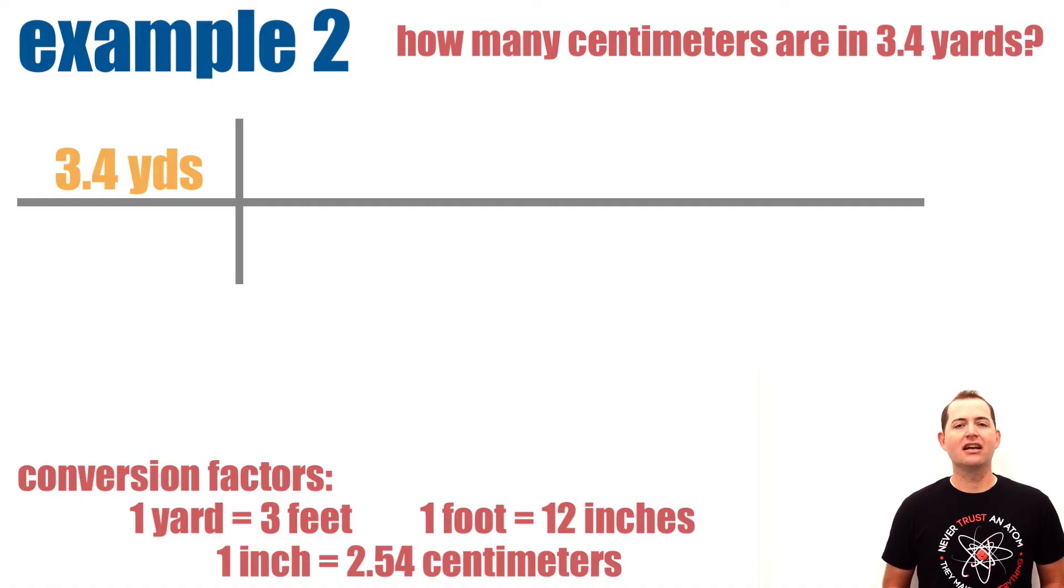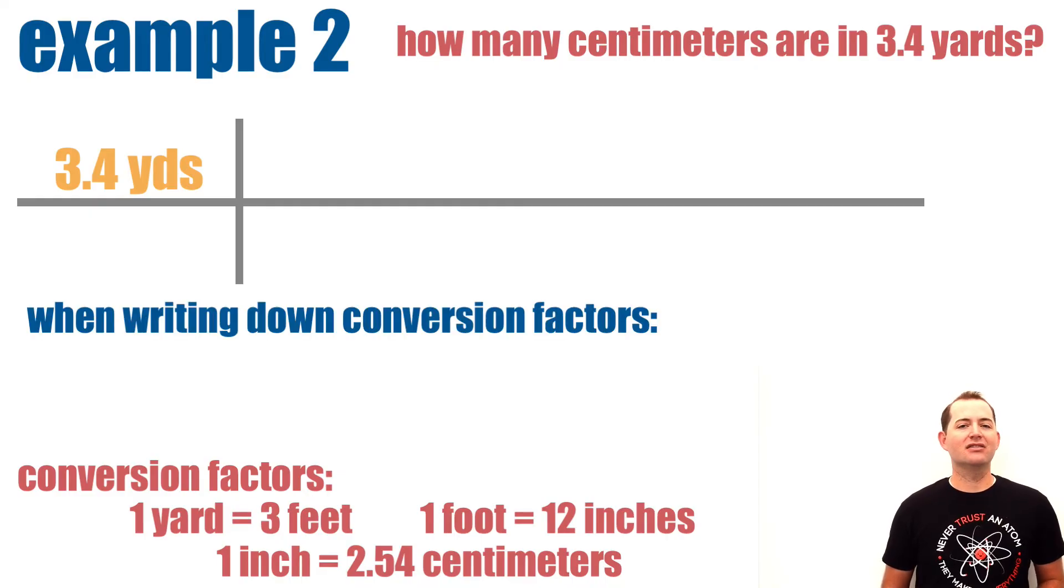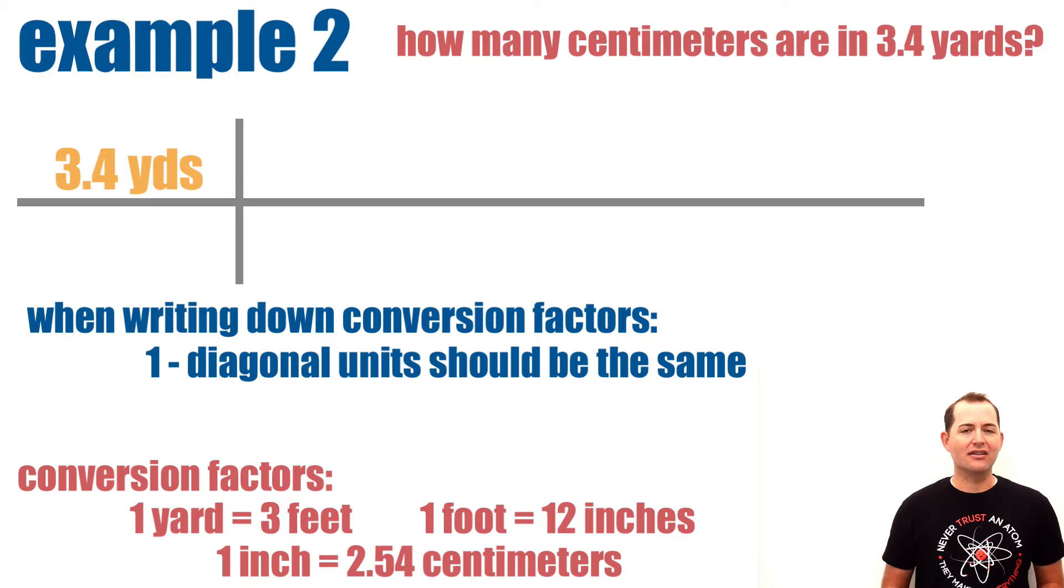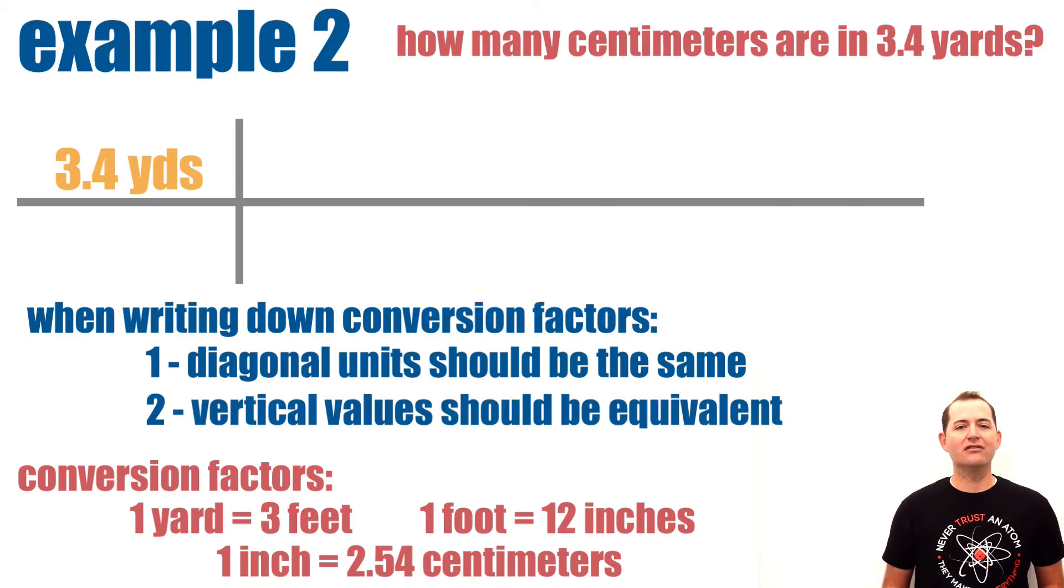Again, these conversion factors can come from things that we have been told in our problem, we can look them up, or they're something that we may have memorized. Next, those conversion factors need to be placed so that they follow our two principles. That the diagonal units are the same and vertical values are equivalent, or they're the same size.